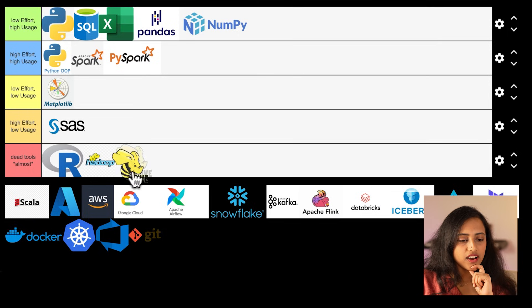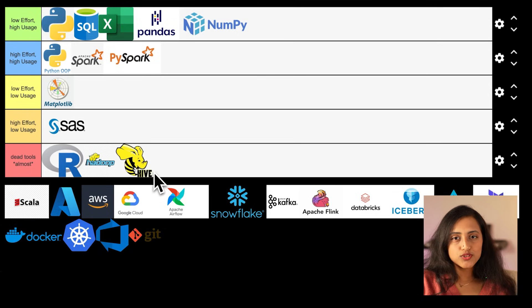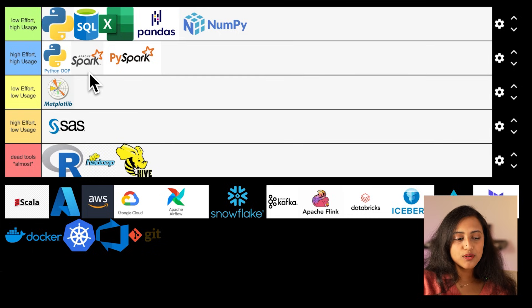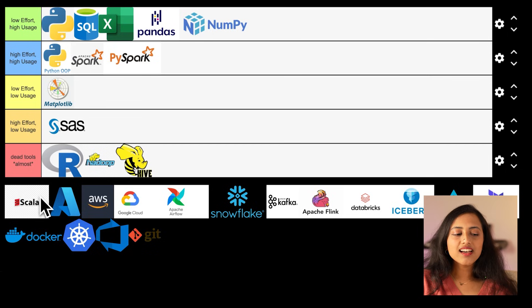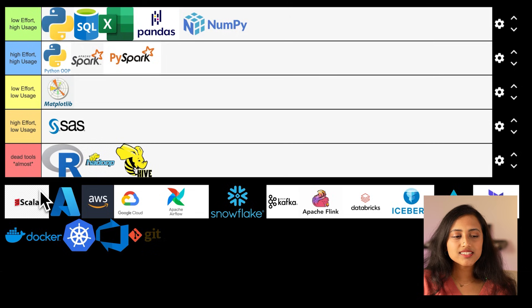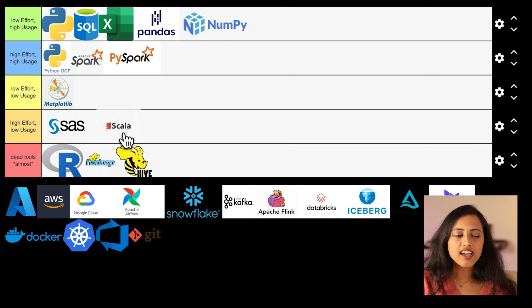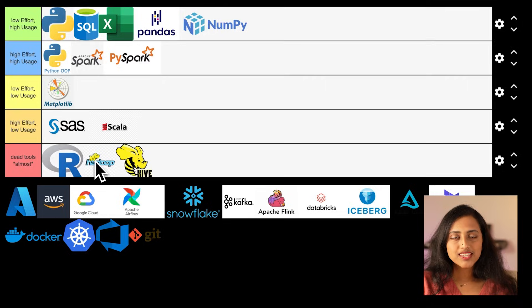Hadoop and Hive are almost dead. There is also Scala, which is the programming language used to code Spark. Scala is seen across job roles, but I would still stand by PySpark being easier than Scala. So I would put Scala in the high effort and low usage zone. That was about big data.